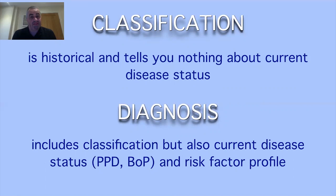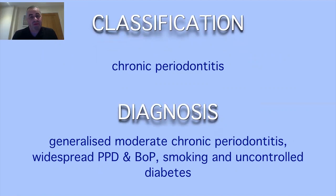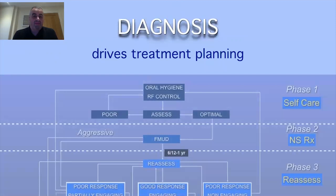A classification is historical — it tells you nothing about the current disease status — whereas a diagnosis tells us more. It tells us whether lots of teeth or some teeth are affected, whether the disease is active or inactive. We don't treat patients on the basis of a classification; we treat them based on a comprehensive diagnosis specific to their clinical situation — for example, localized or generalized, mild, moderate, or severe chronic or aggressive periodontitis.